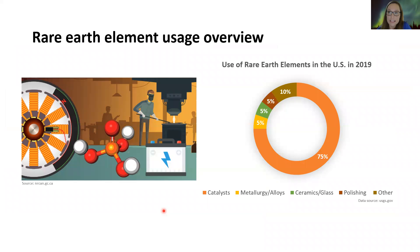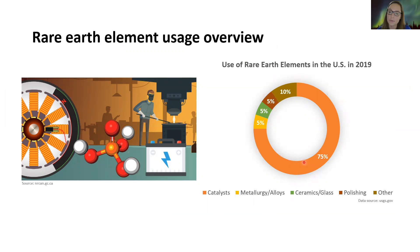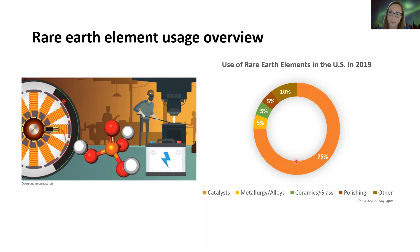Now that we have seen what rare earth elements are, let's take a look at what they are used for. The majority of rare earth elements are used in catalysts in the US and they are made for vehicle exhaust systems to control air pollution. Another common application is as polishing agents — cerium oxide, for example, is used to polish glass, granite, marble, and gemstones. Metallurgy and ceramics also use rare earth elements to create materials with special properties.